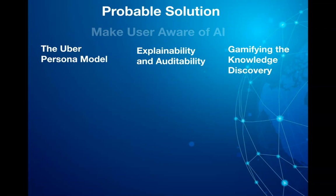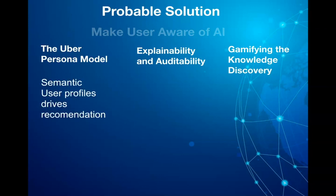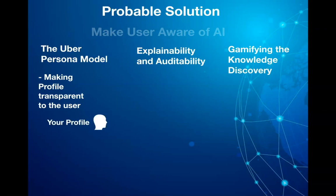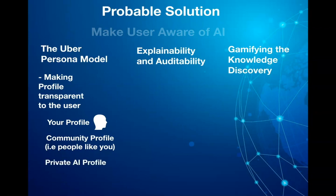Let's start with the Uber Persona Model. All applications build some kind of semantic user profiles incrementally to understand more about the user and provide recommendations. Making this information transparent to the user should be the first step. Your application can have various semantic user profiles — one about you, one about your community, for instance similar users or location-based, and how this has been derived over a period of time. Finally, your application should have a reset profile, which is basically a private AI profile that enables you to use the application without it knowing anything about you, and lets you discover the required information. Leaving the choice to the end user on which profile to use should lead to better control and transparency, and help users build trust in the system.